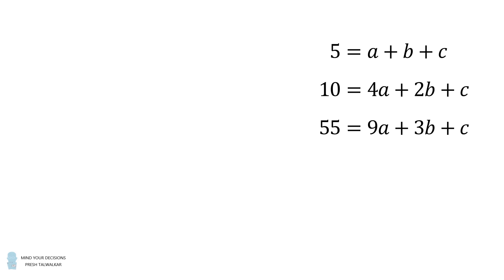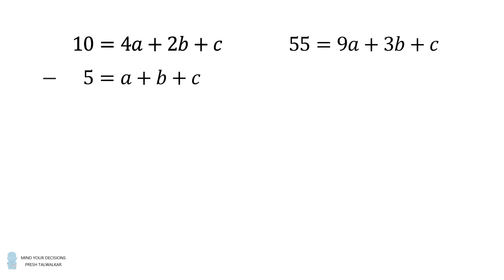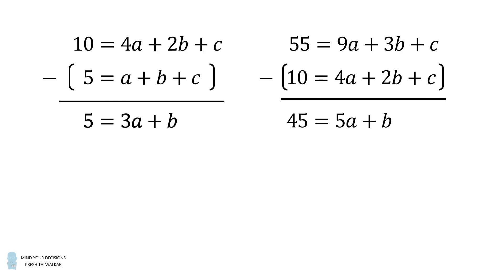Let's now solve this system of equations for a, b, and c. Let's subtract the following two equations and eliminate the c variable. We'll get that 5 = 3a + b. Now we'll take a copy of this first equation and subtract it from the equation that's equal to 55. This will also eliminate the c variable. We get 45 = 5a + b. If we take the equation on the left and then subtract it from this equation, we'll eliminate the b variable. So we get that 40 = 2a, which means a is equal to 20.